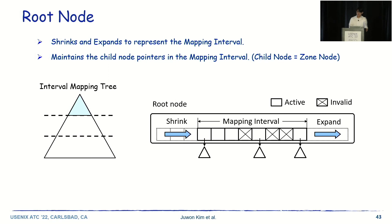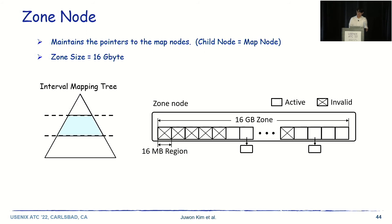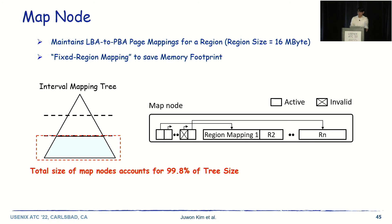The structure of the interval mapping tree is a 3-level tree with different types of nodes at each layer. The nodes at the 1st, 2nd, and 3rd levels are named root node, zone node, and map node respectively. The root node maintains the range of the mapping interval and an array of zone node pointers. This root node shrinks and expands to follow the mapping interval, and its size can change up to the mapping interval size. The zone node represents a single zone, defined as a 16 gigabyte region, and maintains map node pointers. The zone node is deallocated when every map node pointer is invalidated. A map node maintains LBA to PBA mappings for a 16 megabyte region.